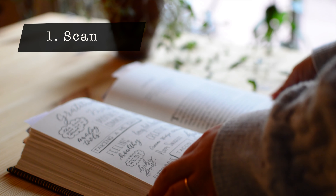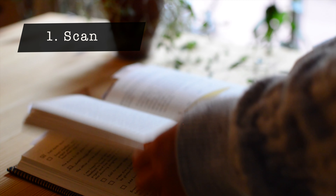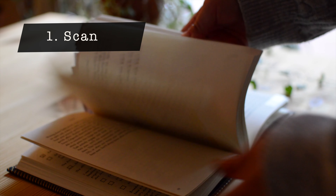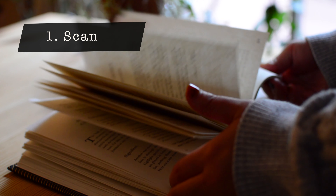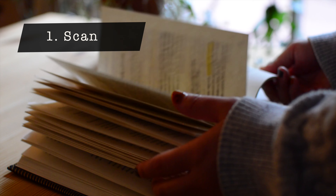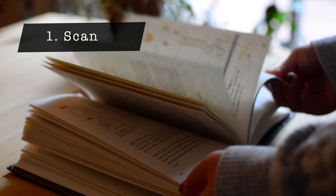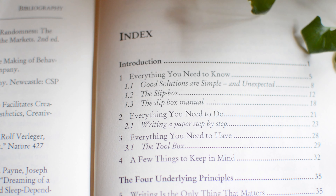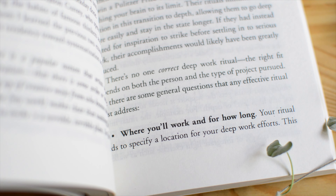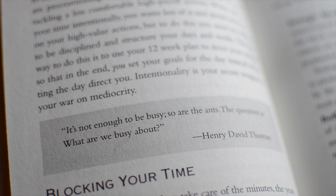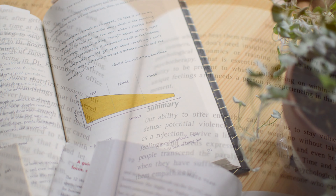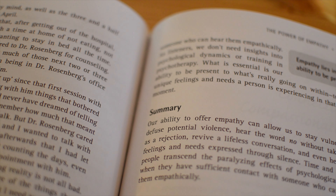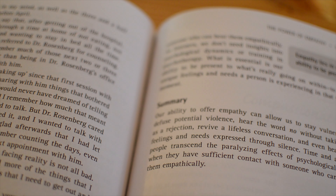The first step is to Scan. The purpose of this step is to get a big picture of what we're reading. We quickly scan and look for things that can give us clues about what the text is going to be about. The most obvious clue would be the title and headlines. Other things you can look for are bold letters, quotes, charts, images, and the biggest clue would be the summary. I personally find it extremely helpful to read the summary first.